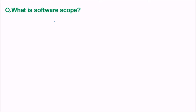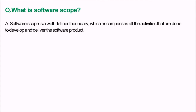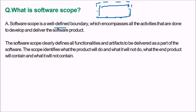What is software scope? Software scope is a well-defined boundary which encompasses all the activities done to develop and deliver the software product. The software scope clearly defines all the functionalities and artifacts to be delivered. The scope identifies what the product will do, what it will not do, what the end product will contain, and what it will not contain.